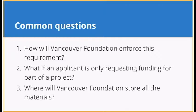There are a few common questions we want to address before the Q&A. First: how will Vancouver Foundation enforce this requirement? The short answer is that we will ask for links to openly licensed work in final reports. At this time we are not planning strict enforcement — we're focused on learning and understand this policy will require time, feedback, and practice. Second: what if an applicant is only requesting funding for part of a project? This policy applies to materials or works created in full or in parts with Vancouver Foundation funding. It applies to the materials created, not to whole projects or organizations. You can voluntarily apply open licensing beyond the funded works, but it's not a requirement.